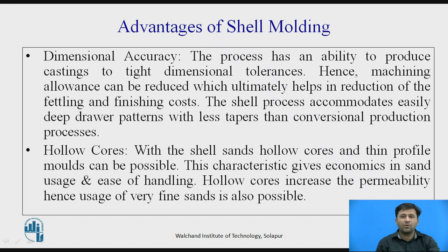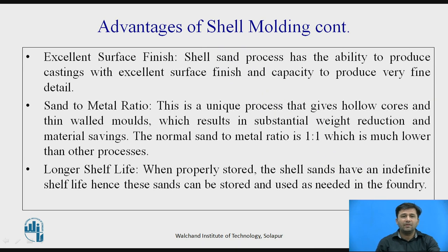Good permeability is important as poor permeability leads to casting defects; shell moulding has a strong advantage here. Third, excellent surface finish — the process produces castings with excellent surface finish and fine detail due to the thin shell. Fourth, sand-to-metal ratio — hollow cores and thin-walled molds give substantial weight and material savings; the normal sand-to-metal ratio is 1:1, much lower than other processes. Fifth, longer shelf life — properly stored shell sands have indefinite shelf life and can be stored and used as needed.